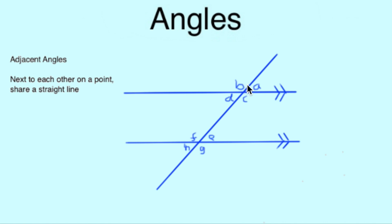Adjacent angles are angles that are next to one another or share a side. Because they share a straight line together, we know that the sum of the two adjacent angles is always going to add up to 180 degrees.